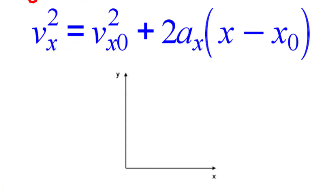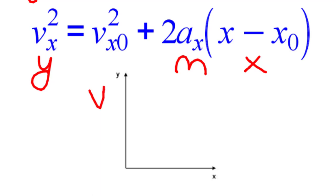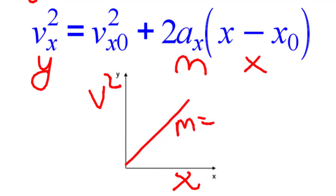For the third equation, on the y-axis we're going to graph velocity squared — so every single velocity, we square those values. On the x-axis, we graph our displacement. We get a linear slope, and that slope is equal to two times the acceleration. This is a very important concept — every single time you see an equation, please take a look at how you would linearize that data.